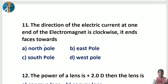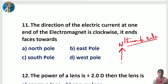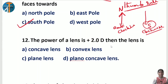Next question from Magnetic Effects of Electric Current: the direction of electric current at one end of an electromagnet is clockwise — which pole does it face? Using the right-hand thumb rule: if current is anti-clockwise at one end, it is the north pole; if it is clockwise, it is the south pole. Since the question says clockwise, the answer is south pole.